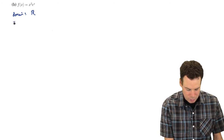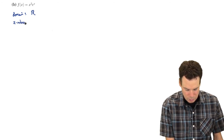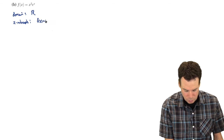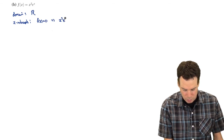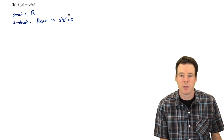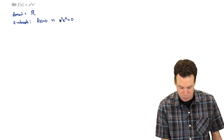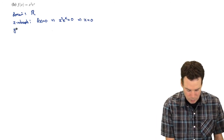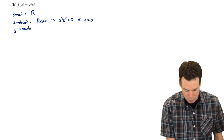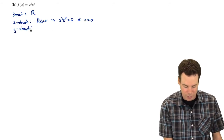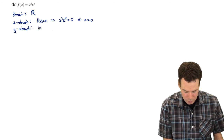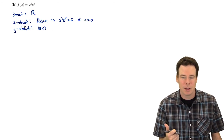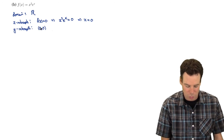Do we have any intercepts? Let's look at the x-intercepts — those are where the function is 0. Where is x²eˣ equal to 0? The exponential function is never 0, so the only place this product can be 0 is when x² = 0, meaning x = 0. That also gives us our y-intercept, so the only place the graph hits either axis is right at the origin, and it hits both of them there.